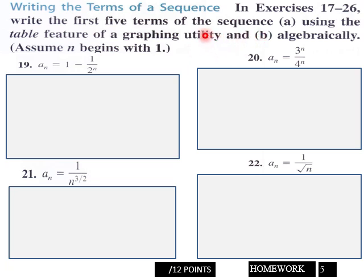And then B, algebraically. So do five of them here on your calculator, and then do the same five again using algebra, and use these boxes here to do that. You got 12 points here for page five.